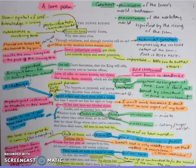The Sun Rising. Busy old fool, unruly sun, why dost thou thus through windows and through curtains call on us? Must to thy motions lovers' seasons run? Saucy pedantic wretch, go chide late schoolboys and sour apprentices. Go tell court huntsmen that the king will ride, call country ants to harvest officers.